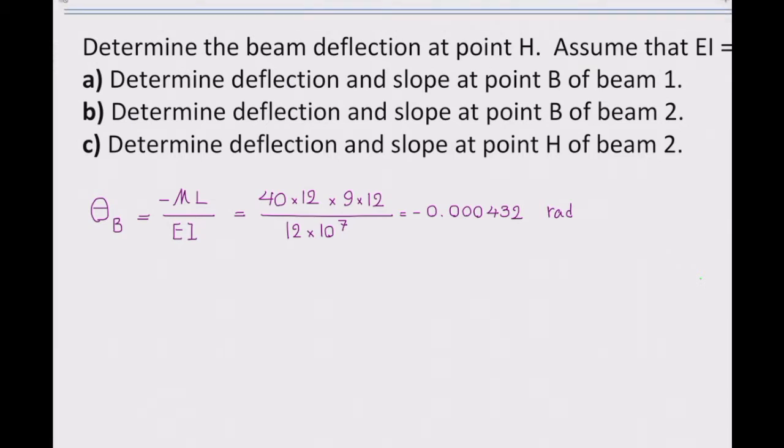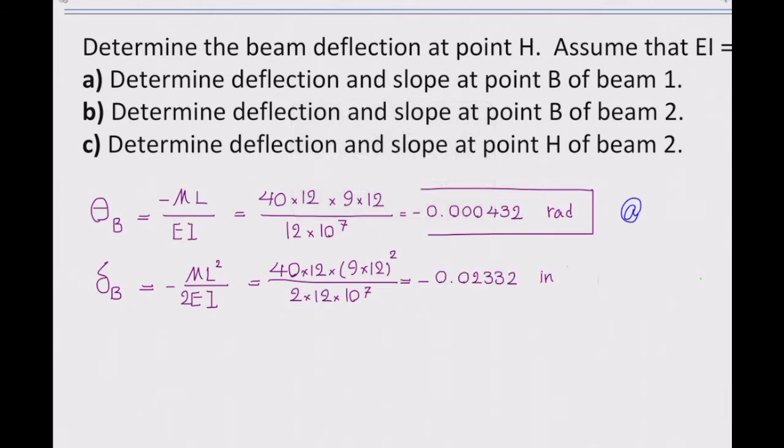Distance of this beam from A to B is 9 feet, and again I need to multiply that by 12 to convert that into inches and divide that by EI. This is the value of theta at that point. Now the second part looks for the value of deflection at that point, which is equal to delta B. Delta B is ML squared over 2EI. I simply plug the values: M is 40 times 12, and the length is 9 times 12. That gives me a value of negative 0.02332 inch. These two are actually showing the answer of the first part, part A. The top one is slope and the bottom one is deflection.